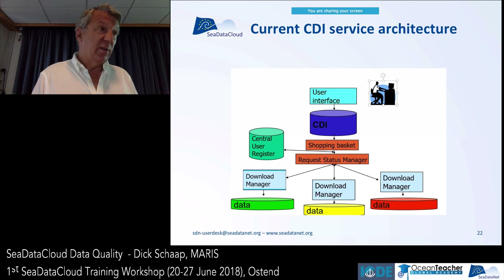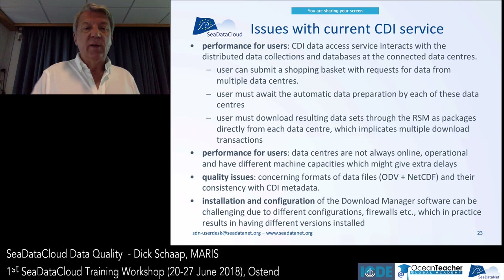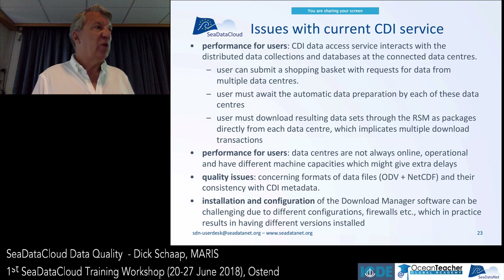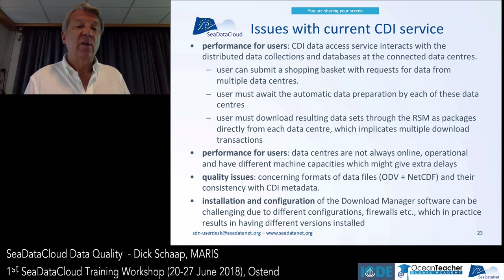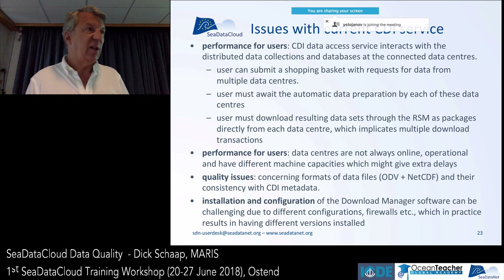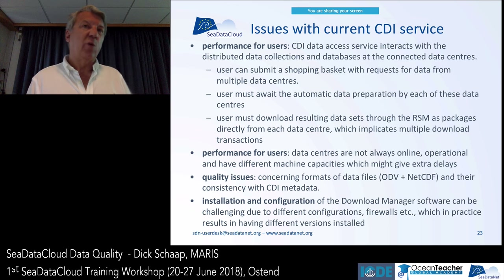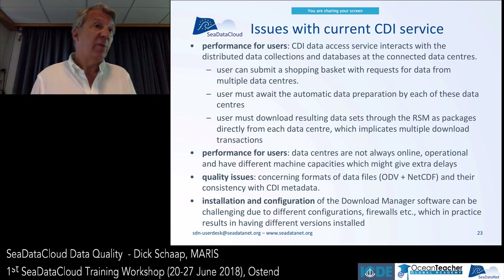The Download Manager talks to your databases or data files and to the central Request Status Manager to handle requests and make data available for users. This works nicely and has worked all the time, but over time we've collected some issues. One is performance: a user can fire off a shopping basket containing data from different providers across multiple data centers, meaning that user then has to download data from each individual center. If I make a collection from 60 data centers I have to do 60 clicks.